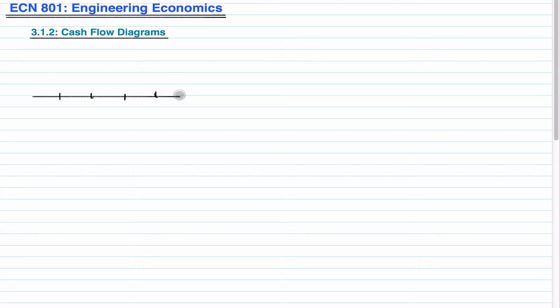In this video, we're going to talk about cash flow diagrams. A cash flow diagram, you can think of in economics like free body diagrams in physics — it paints a picture of your problem. If you have a cash flow diagram, you have your interest periods, and let's say it ends at five years.